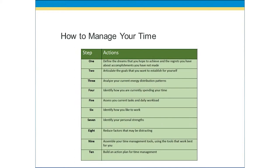Step four is identifying how you currently spend your time and where you distribute that energy. In step five, you will assess your current tasks and your daily workload, understanding not only where you are currently spending your time, but what tasks you have to accomplish. Step six is identifying how you like to work — we are much more effective doing things we like to do in the ways we like to do them. Step seven is identifying your personal strengths. Knowing how you like to work helps you identify your personal strengths. In step eight, you will reduce factors that may be distracting — items that are preventing you from distributing your energy appropriately and getting things accomplished.